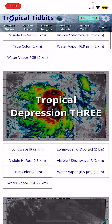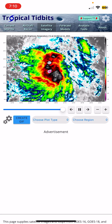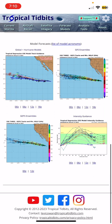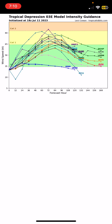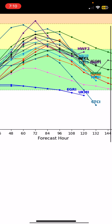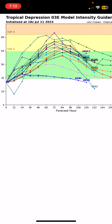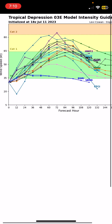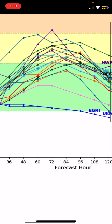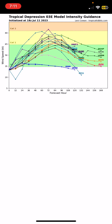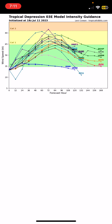Taking a look at Tropical Tidbits again, there is thunderstorm activity near the center. Looking at the intensity guidance, most models have it peaking as a Category 1 hurricane. The HWRF model predicts it as a high-end Category 1 to low-end Category 2. Another model — possibly the HPBI — also has it close to Category 2 guidance. So that's something to take note of.